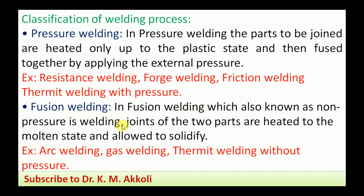The other main type is fusion welding. In fusion welding, the metal is heated to its molten state. The two pieces in the molten state are brought together, and sometimes filler material is also added. When allowed to solidify, the two molten metal pieces join together. Fusion welding is also known as non-pressure welding — pressure is not applied here. Examples of fusion welding are arc welding, gas welding, and thermite welding without pressure. In arc welding, electric arc is used to heat the metal. In gas welding, the flame from burning gas combustion heats the metal pieces to molten state. In thermite welding without pressure, the metal is heated to molten state by the exothermic reaction, and no pressure is applied.